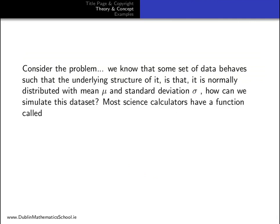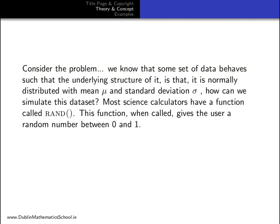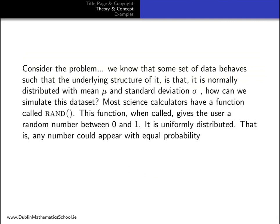Most science calculators have a function called rand. This function, when called, gives the user a random number between 0 and 1. It is uniformly distributed. That is, any number could appear with equal probability between 0 and 1, of course.